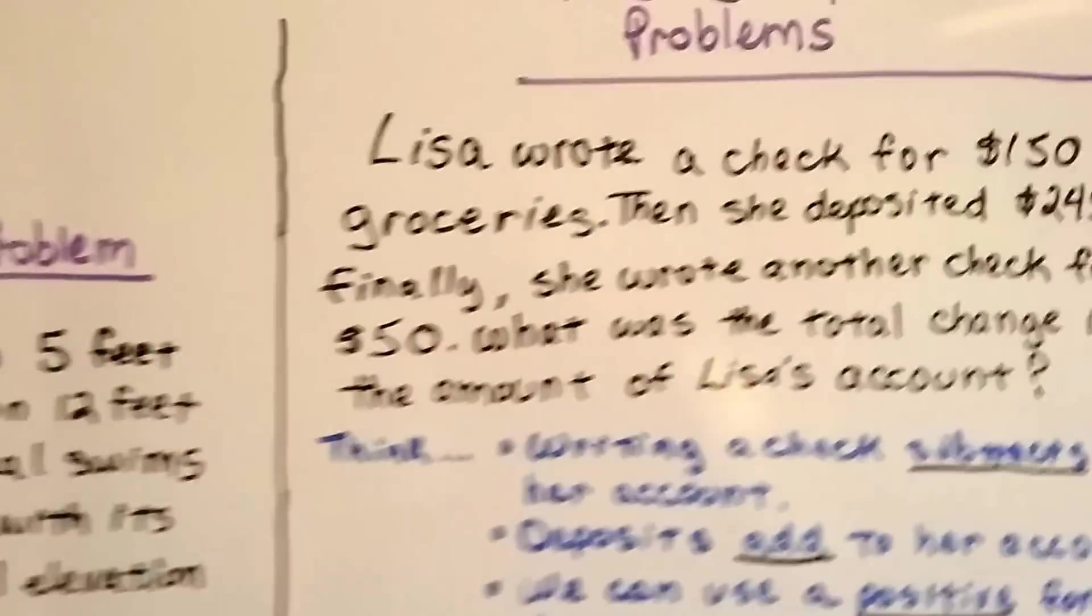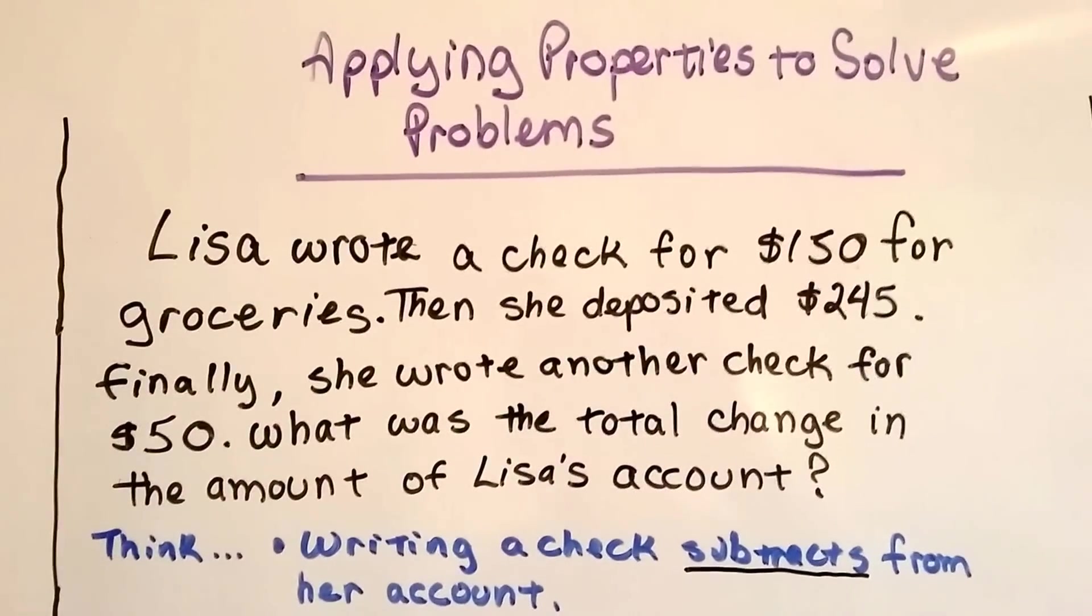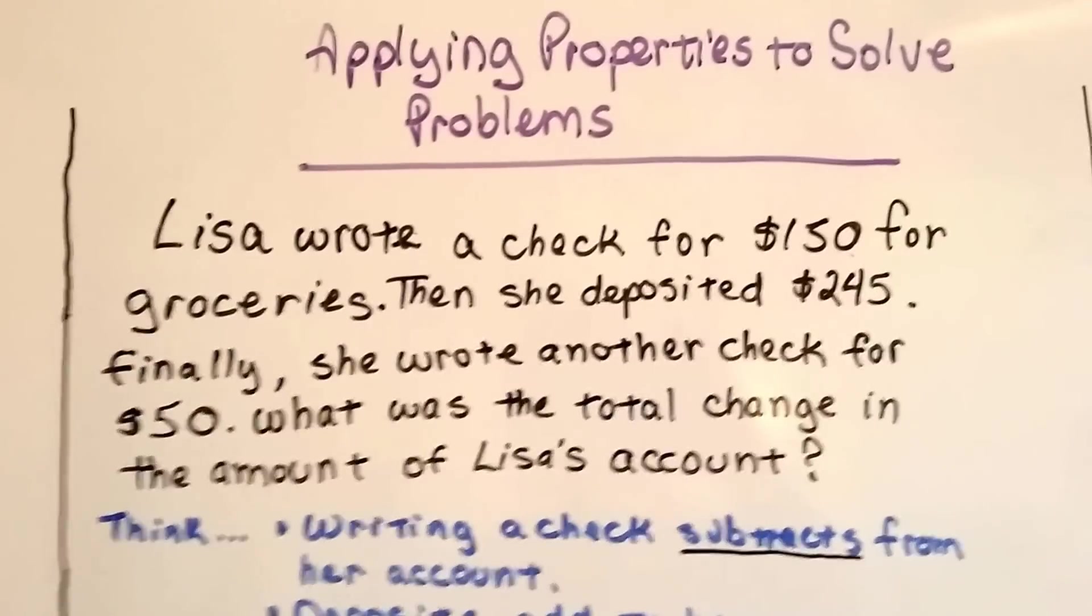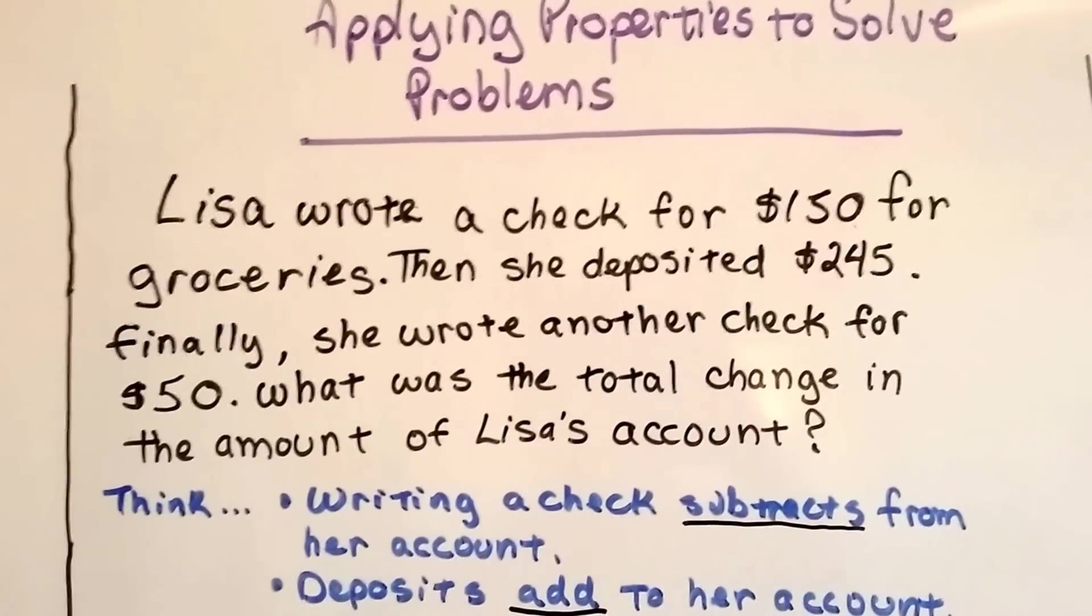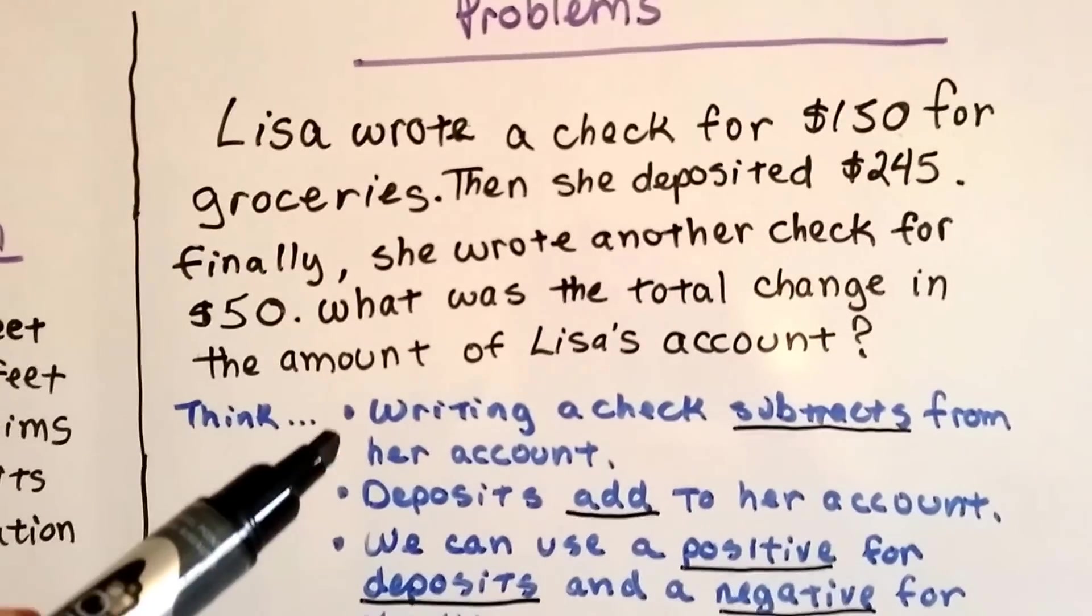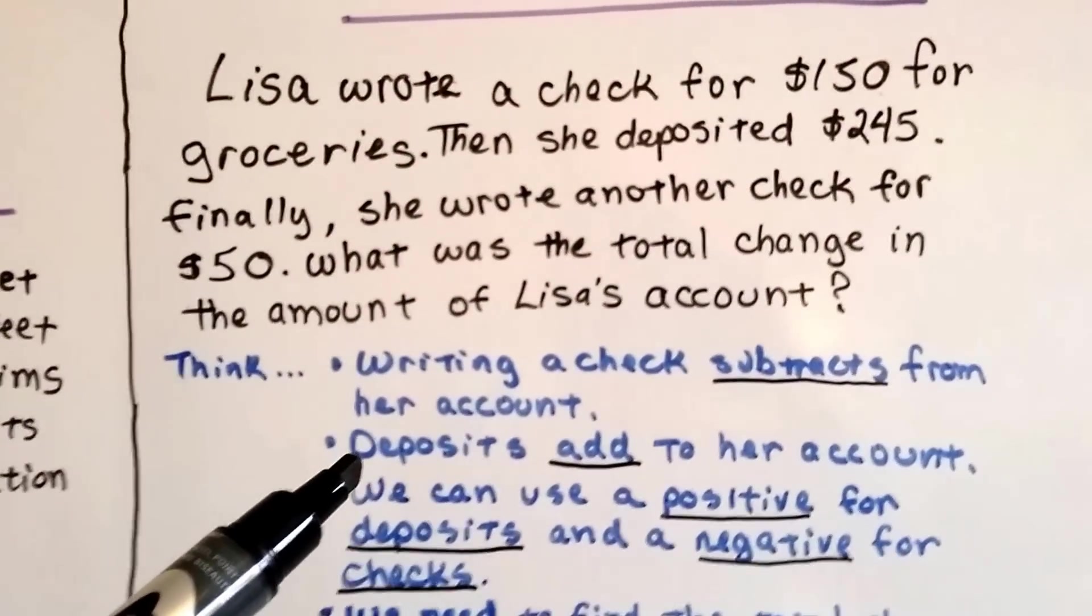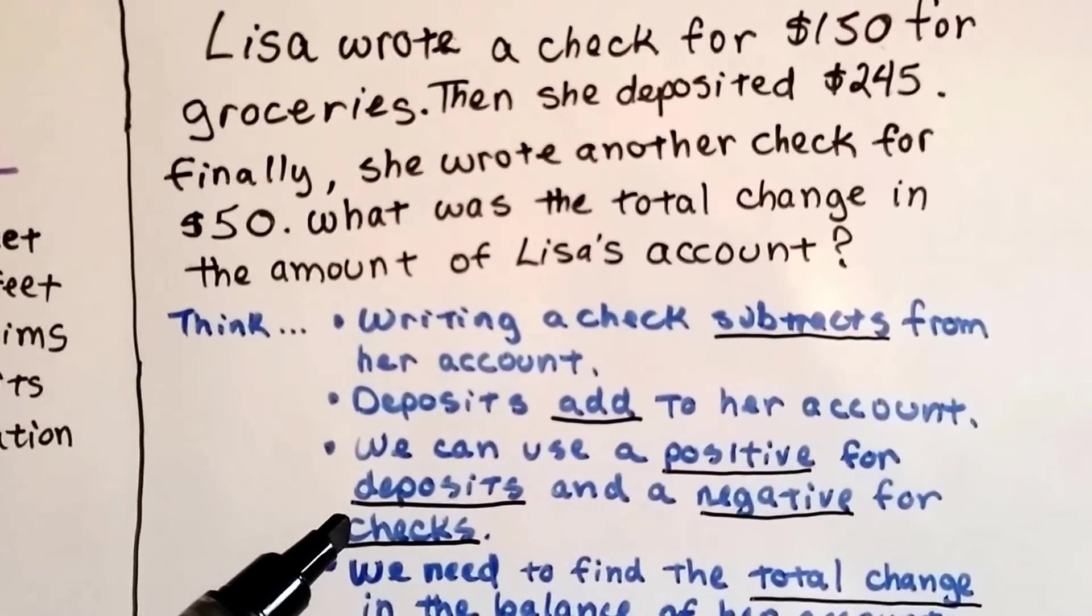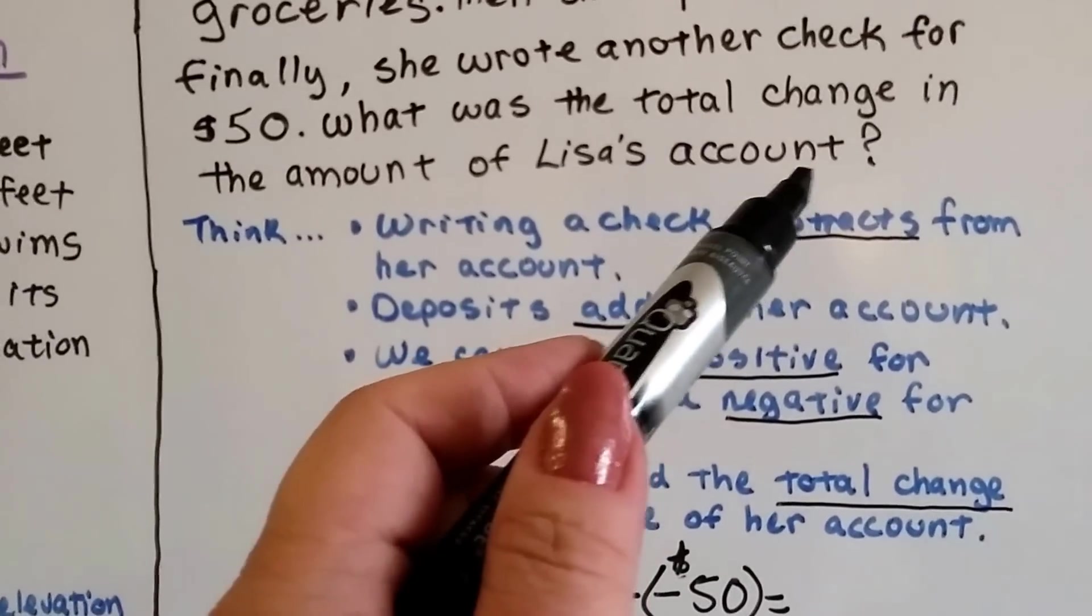Now we're going to apply some properties to solve problems. Lisa wrote a check for $150 for groceries. Then she deposited $245. Finally she wrote another check for $50. What was the total change in the amount of Lisa's account? Writing a check subtracts from her account. It takes money out. Depositing adds to her account. We can use a positive for the deposits and a negative for the checks that she wrote.